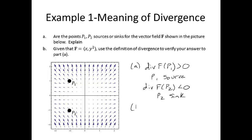Part B says, given the vector field f, which we have the picture of here, it's got components x and y squared, use the definition of divergence to verify your answers to part A.